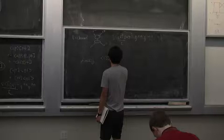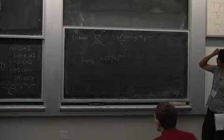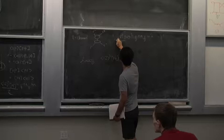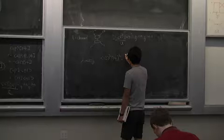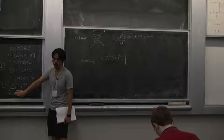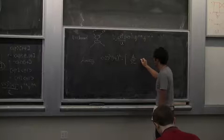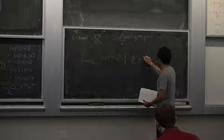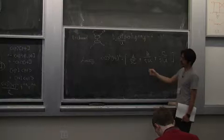The T-channel residue denominator is minus U. So the ansatz is ⟨1,2⟩² [3,4]² divided by some combination. To contain all possible poles, let me write: A over ST plus B over TU plus C over SU, where A, B, C are arbitrary for now. I'll try to fix A, B, C by looking at the factorization channels — it has to match at each channel.